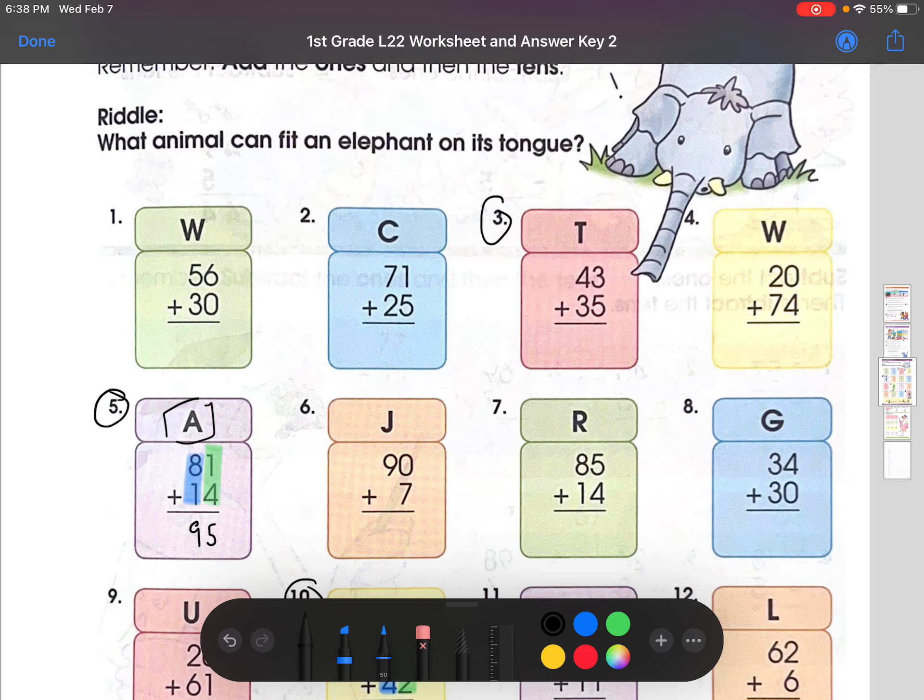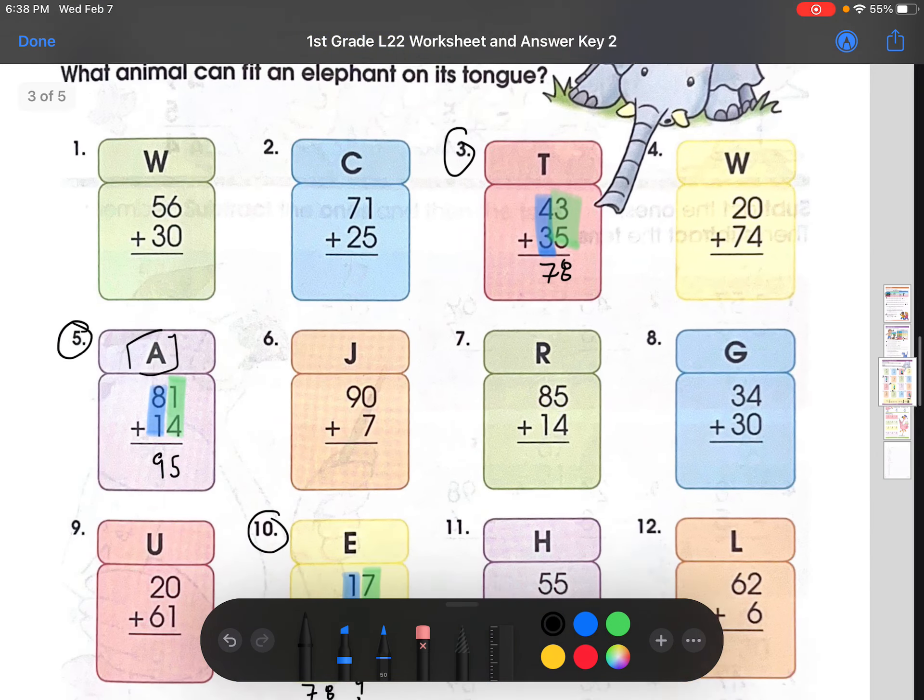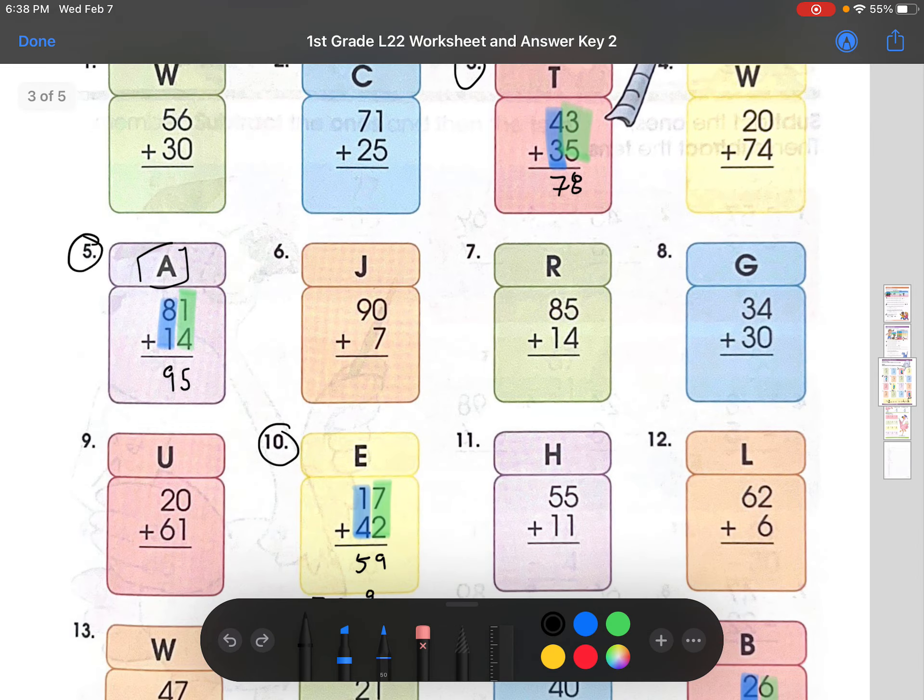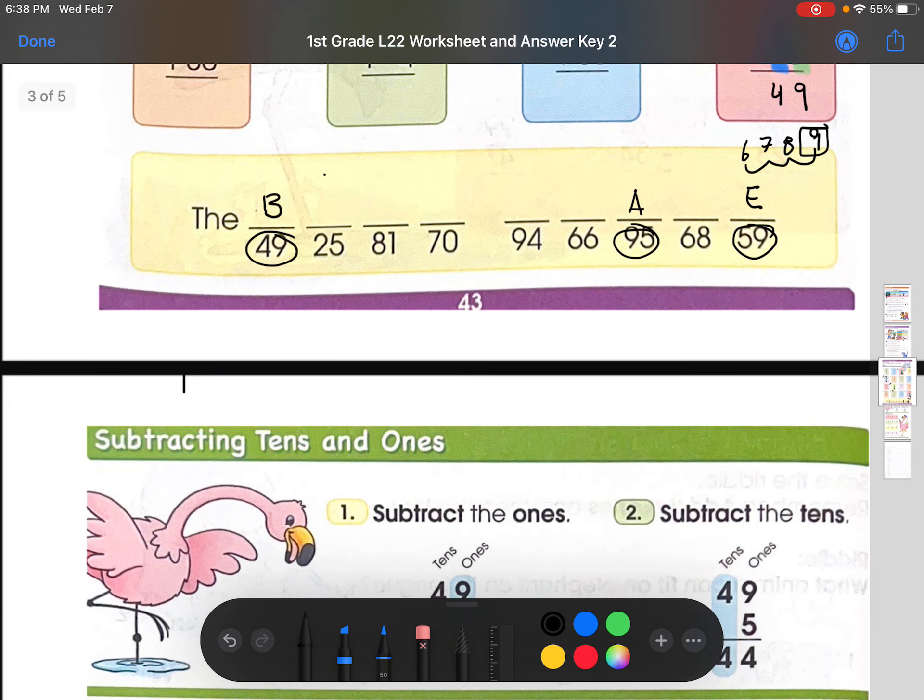Let's do one more, just because I'm feeling generous. Number 3. 43 plus 35. So again, focus on the 1s place. 3 plus 5 is 8. And then we would focus on the 10s place. 4 plus 3, which is 7. So now we come down here. Oh, there is no 78, which means we do not use this letter. So you just cross it out or just leave it however you want. Just leave it quick. But let's move on to our last page.